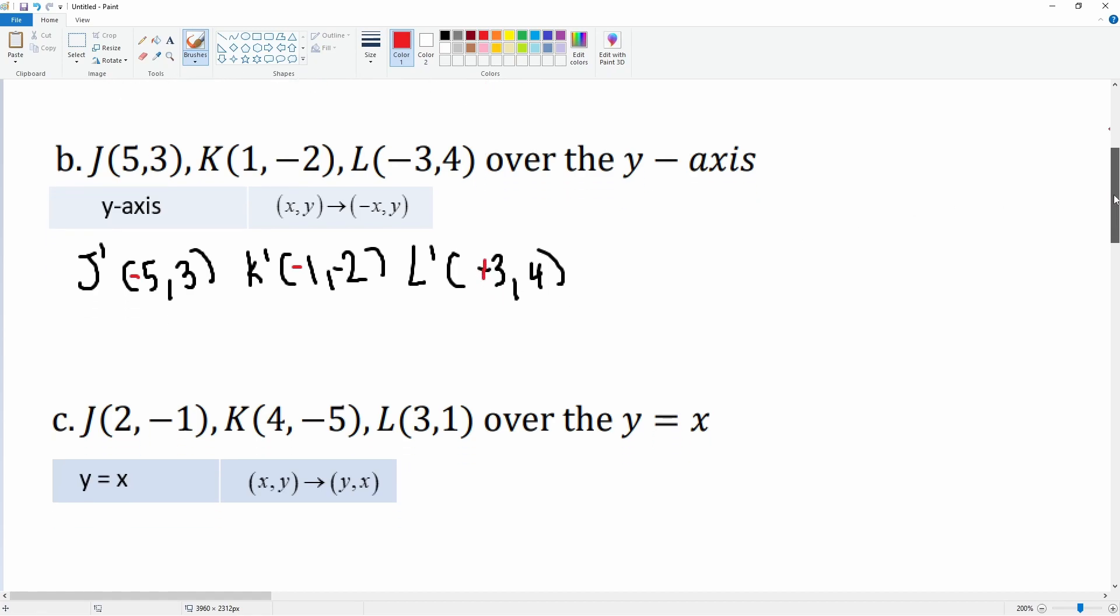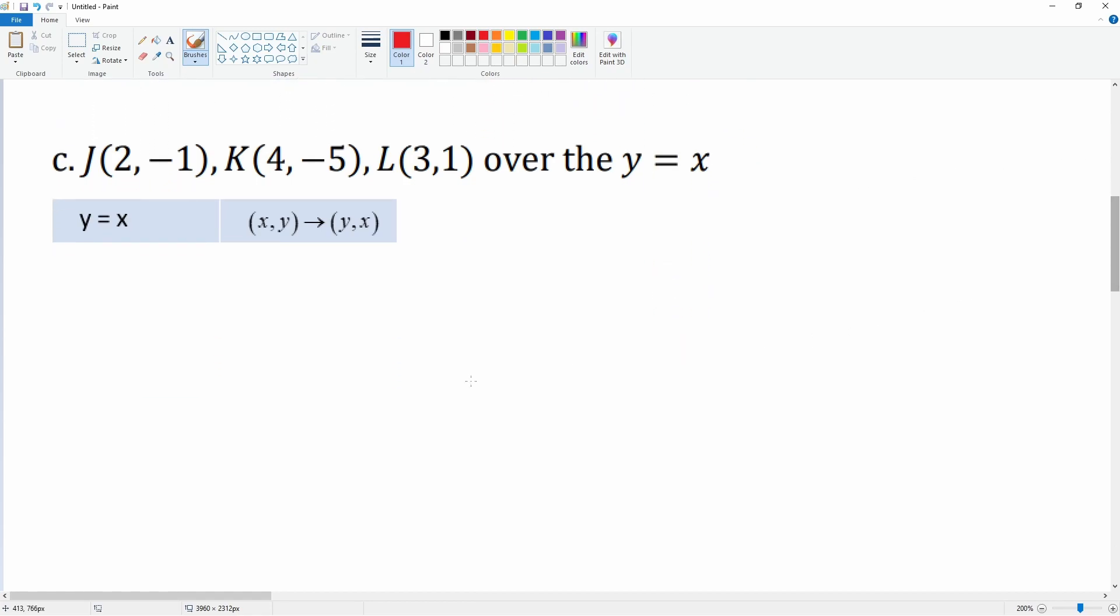C: when we reflected over y equals x, it seems like the x and y values switch spots. So J prime, the negative 1 goes in front and then followed by that 2.